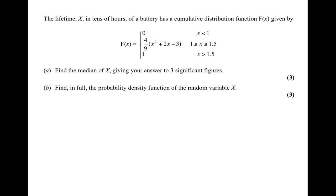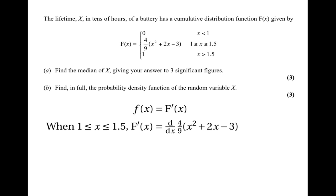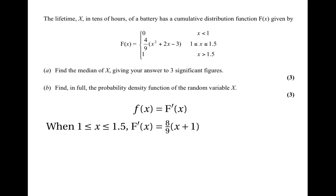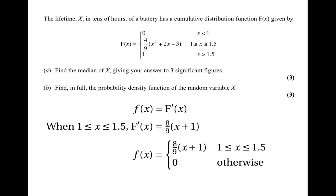The next part of the question asks us to find the probability density function for the random variable x. To answer this, you need to remember that the probability density function is found by differentiating the cumulative distribution function. So we differentiate F(x). When x is between 1 and 1.5, the derivative is d/dx of 4/9 × (x² + 2x − 3), which is 4/9 × (2x + 2), or more simply 8/9 × (x + 1). So the PDF is 8/9(x + 1) when x is between 1 and 1.5, and 0 otherwise.